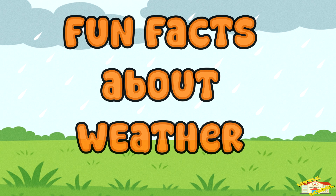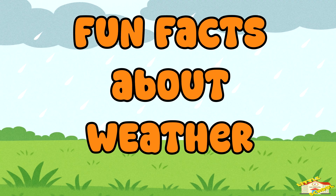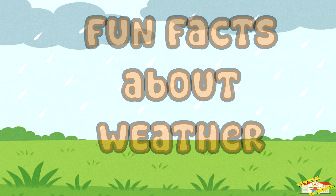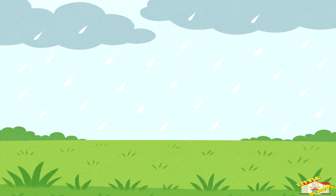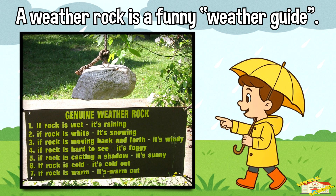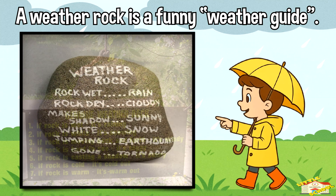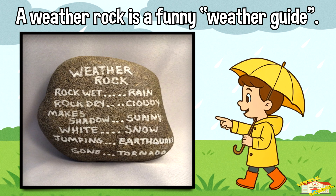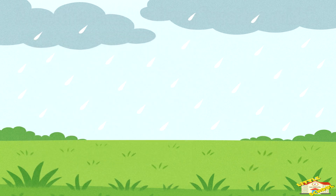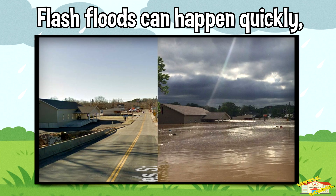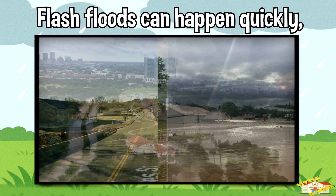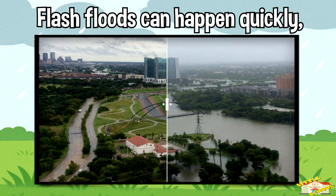Here are some fun facts about weather. A weather rock is a funny weather guide made of a rock on a string — if it's wet, it's raining; if it's swinging, it's windy. Flash floods can happen quickly, sometimes turning dry stream beds into rushing rivers in minutes after a heavy rain or dam break.